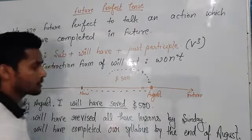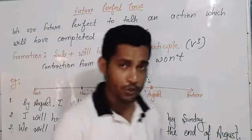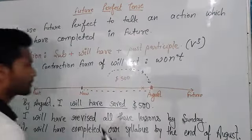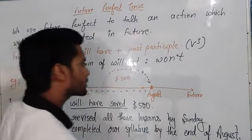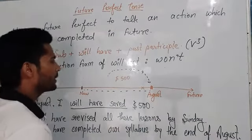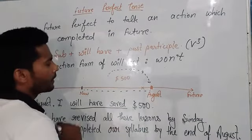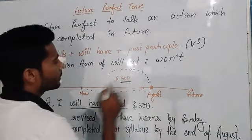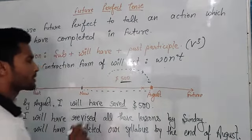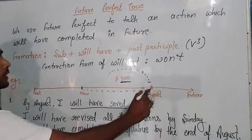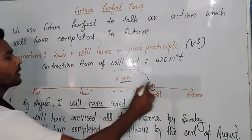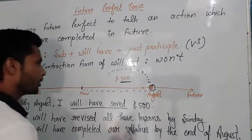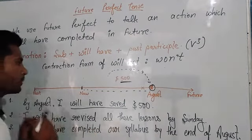Imagine this is July, and by August, if I save ten or twenty dollars every day, then somewhere in August I will have saved five hundred dollars — till the end of or in the middle of August. Okay, this is how we have framed this sentence.